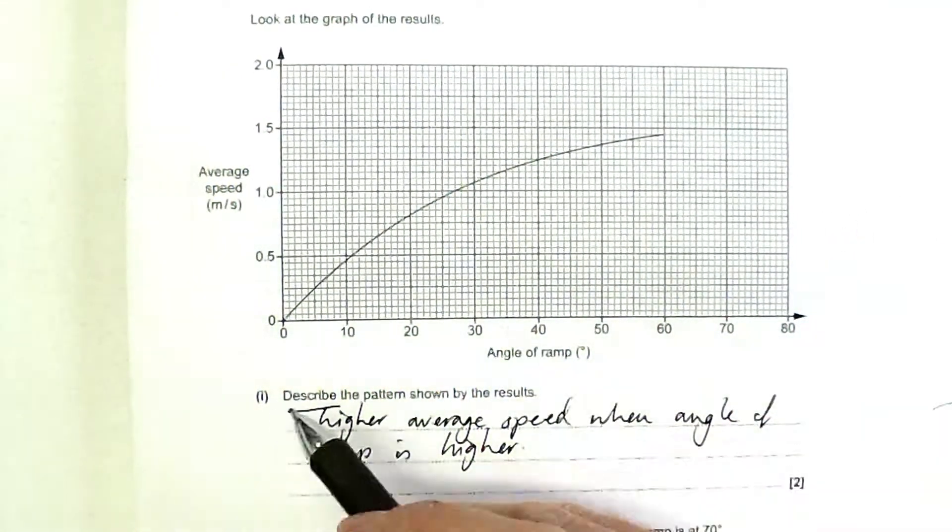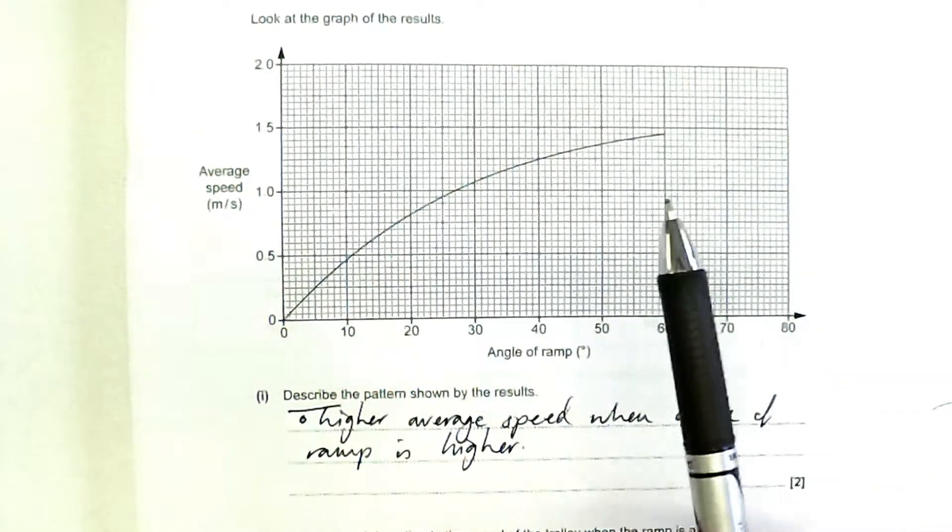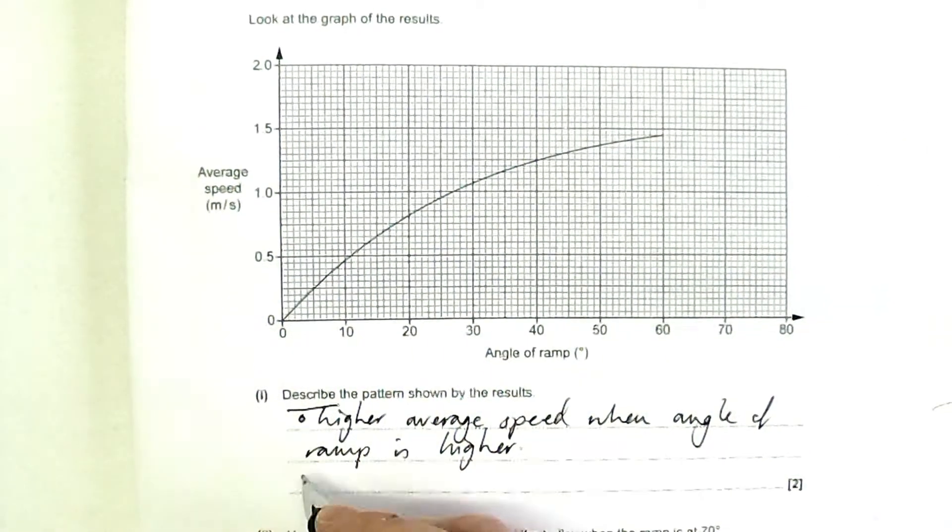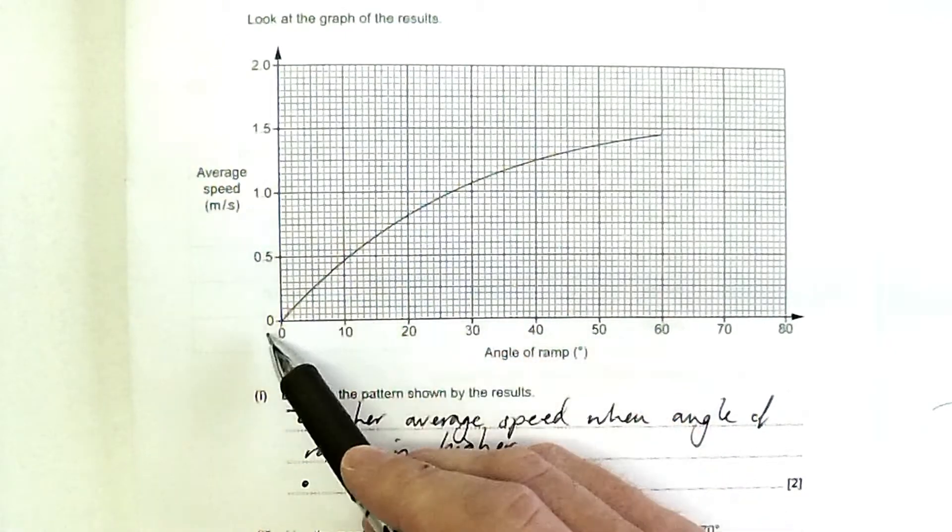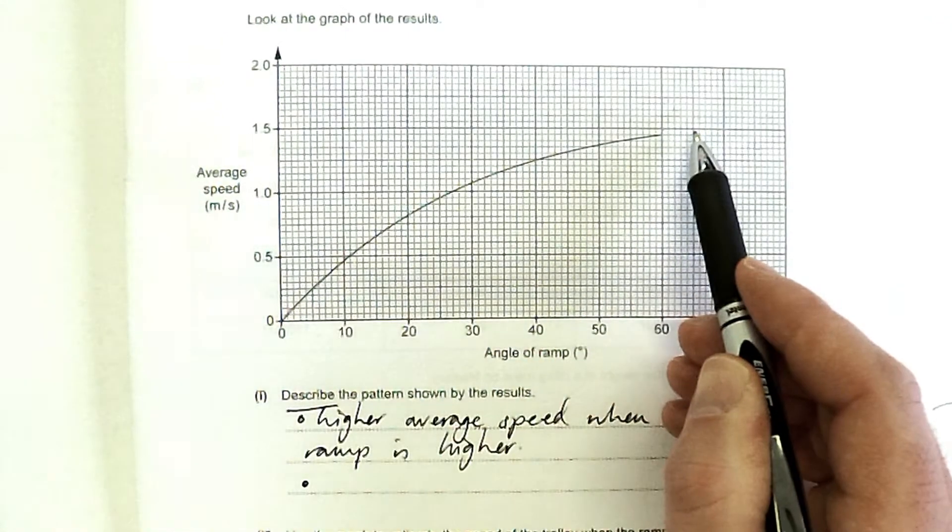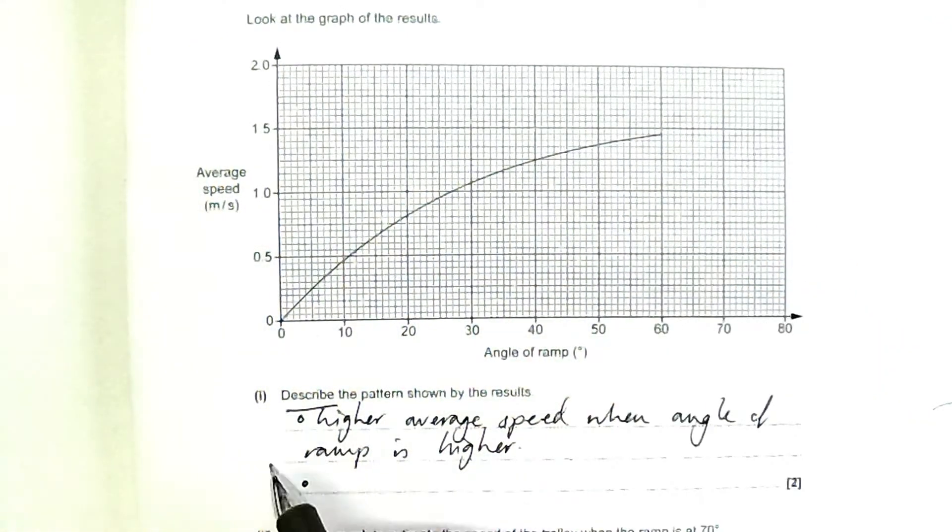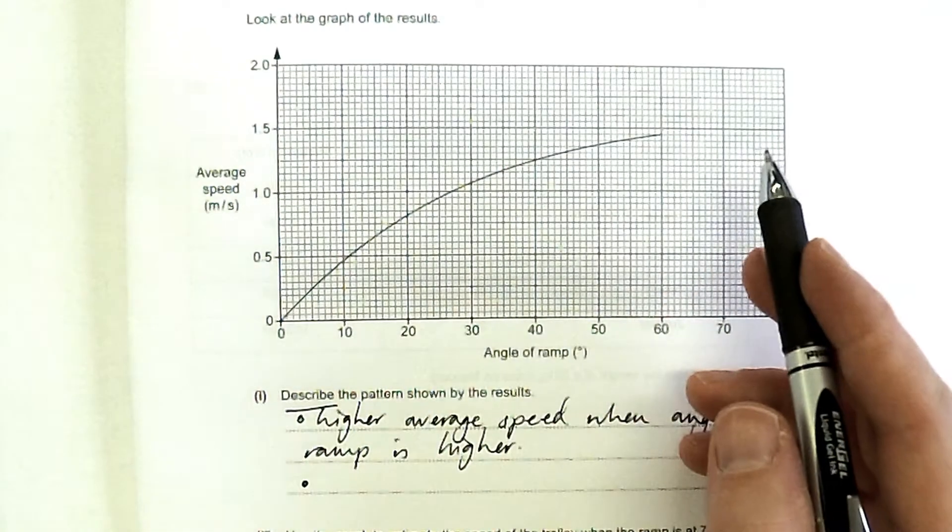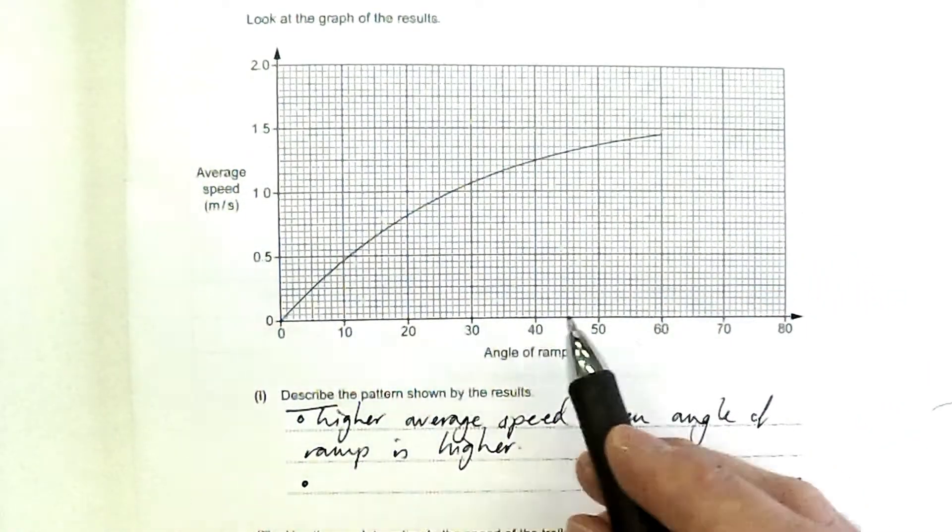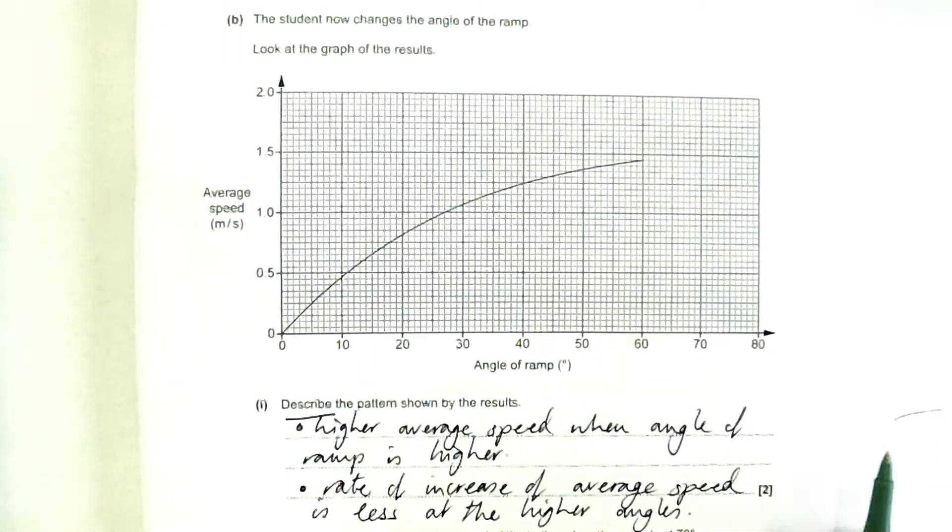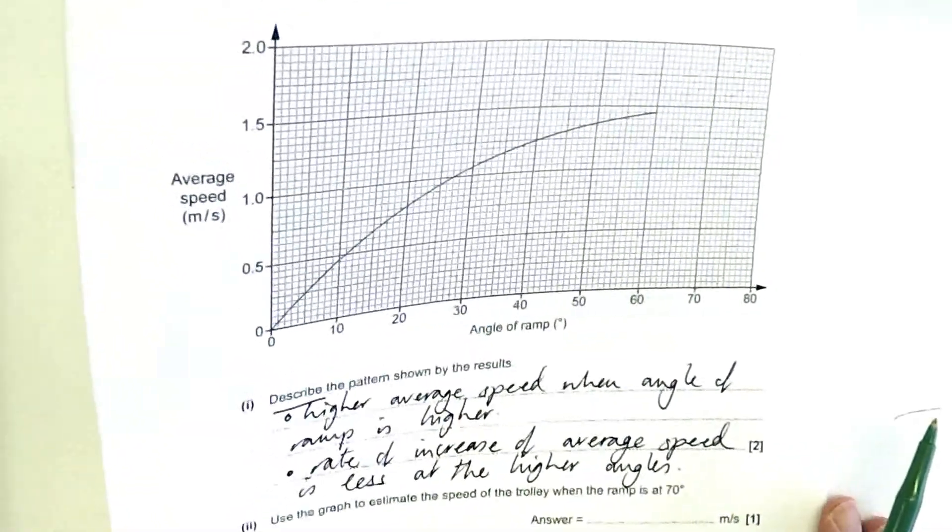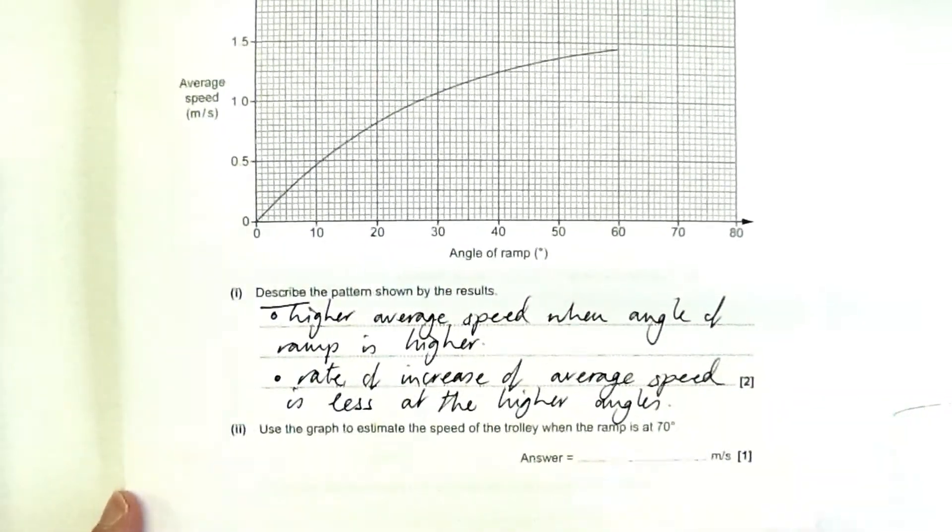So what else can I say about this pattern? Ah, it's not a straight line, is it? It's not proportional. So I can say that initially it's increasing more rapidly than it is at higher angles. So I could say something like the rate of increase in average speed is less for the higher angles. Now it wouldn't be enough for that second mark just to say it's a curve. Okay, because you have to say, well, what way is that data curved?